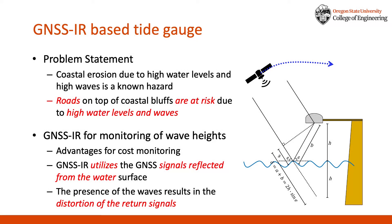We utilized the GNSS IR technique, which uses the GNSS signal reflected from the water surface to estimate the wave heights based on the remote sensing technique. The presence of waves results in the distortion of the latent signals, and this characteristic makes it possible to estimate the wave height.